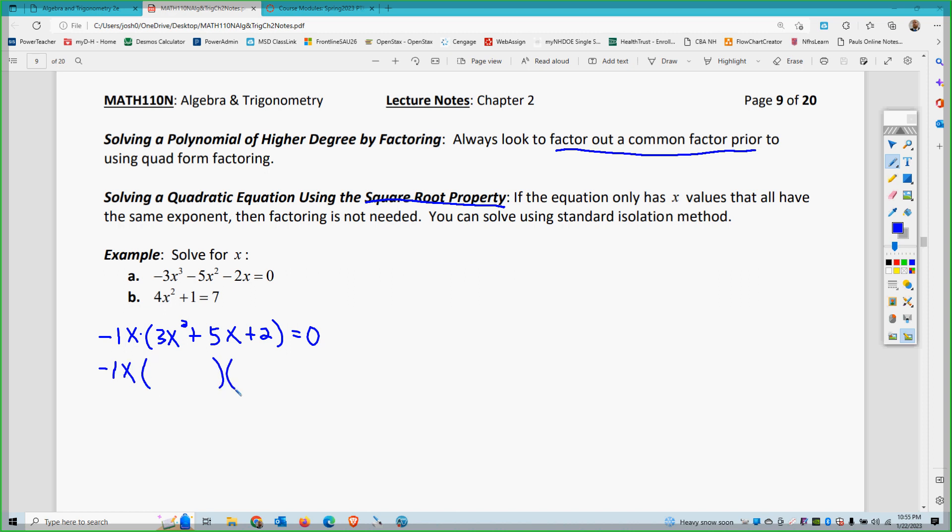So if I do that, I'm going to get 3x squared plus 5x plus 2. If there's a negative you can factor out, always do that. It just makes it a lot easier. You don't have to, but it makes it so much easier. So now I'm going to use my standard quad-form factoring for what's left here. So 3x, 3x divided by 3, 3 times 3 divided by 3 is 3. So 3 times 2 is 6, which is 1 times 6, 2 times 3.